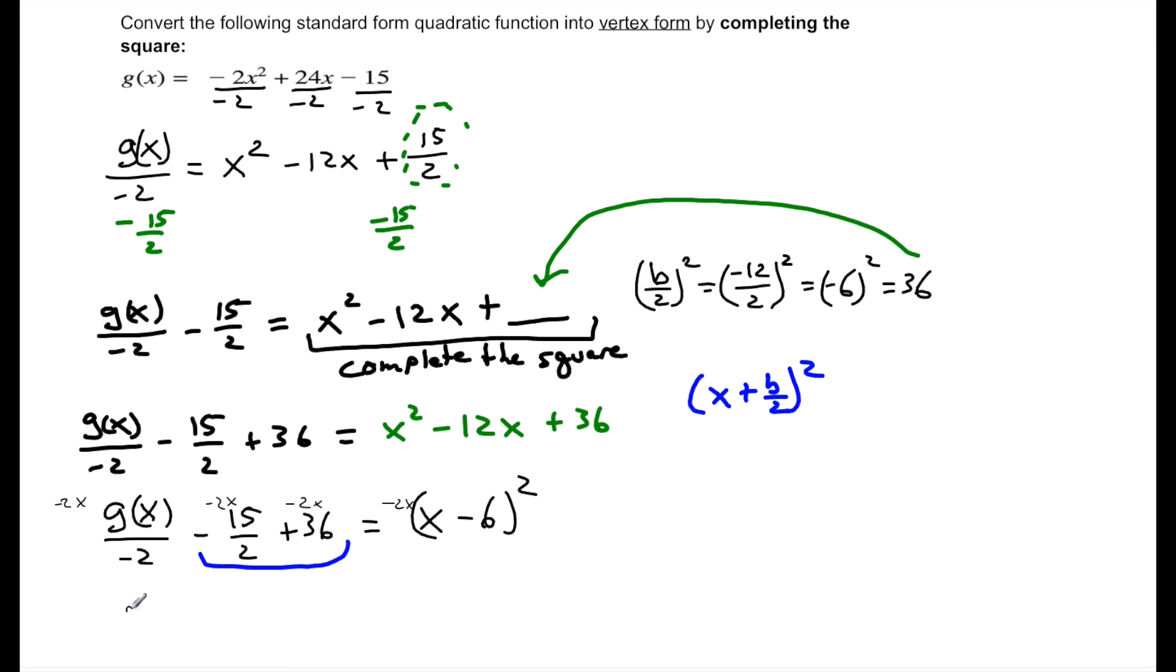And I'm left with g of x plus 15 minus 72 equals negative 2 times x minus 6 squared. Last thing I got to do is simplify this.